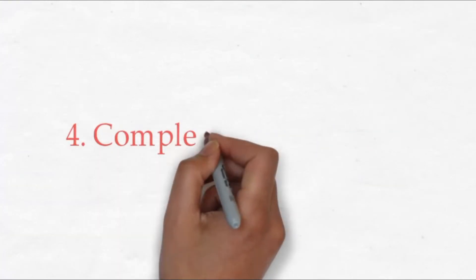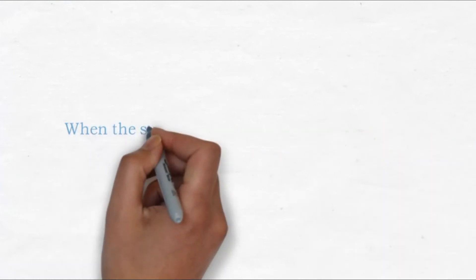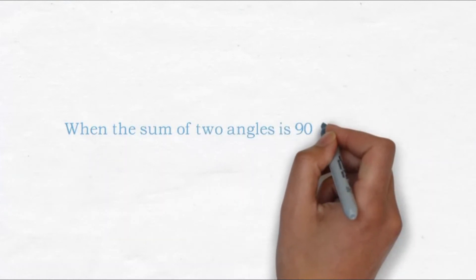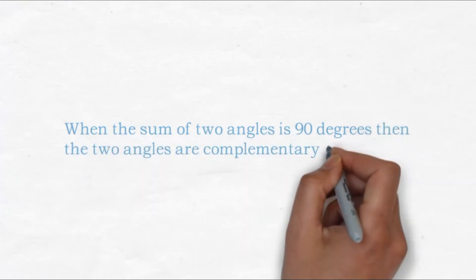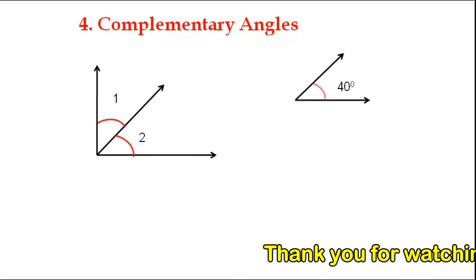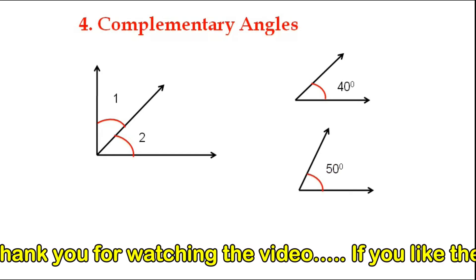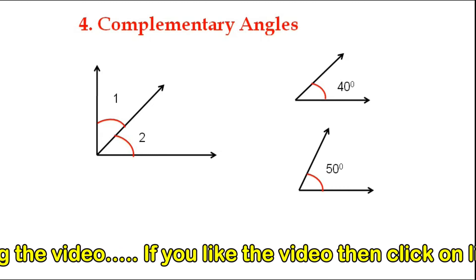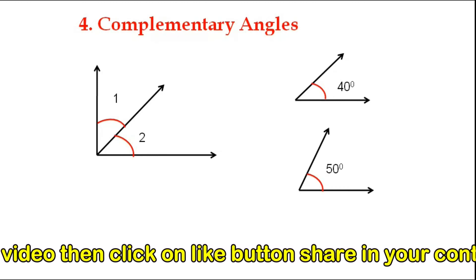Fourth: complementary angles. When the sum of two angles is 90 degrees, the two angles are called complementary angles. Complementary angles may or may not be adjacent. Here angle 1 and angle 2 make a complementary pair — one angle is 40 degrees and the other is 50 degrees, and their sum is 90 degrees. Therefore they are complementary angles.